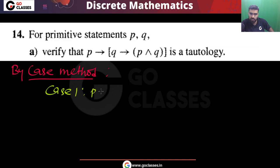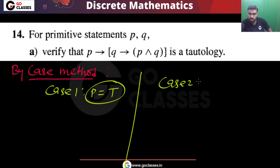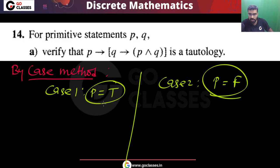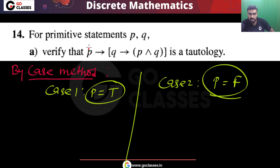Case 1: P is true. Case 2: P is false. There is no other case possible — either P will be true or P will be false. Let's call this statement S.